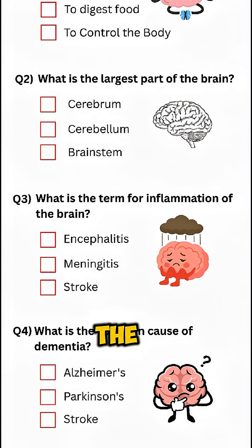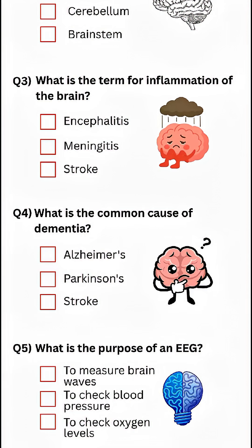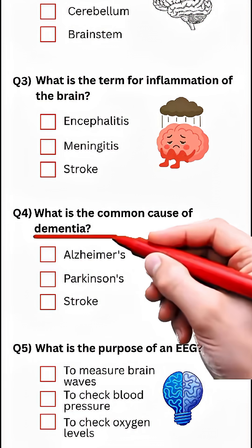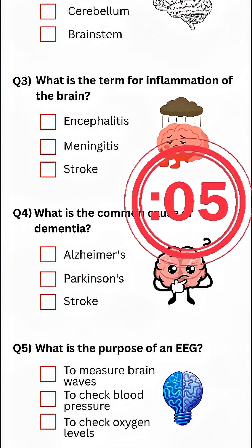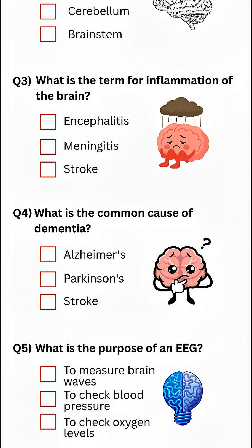If you got the first three correct, hit the like button. Question four: What is the common cause of dementia? Answer: Alzheimer's disease.